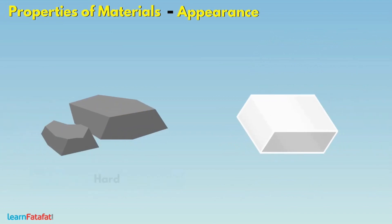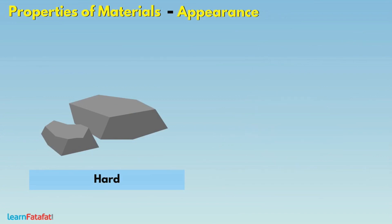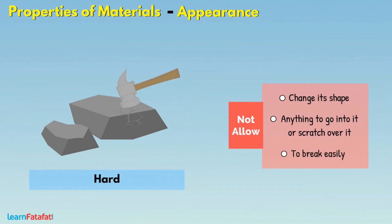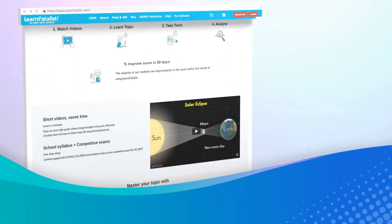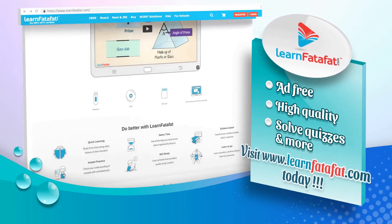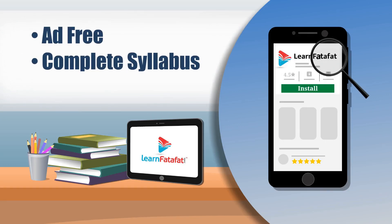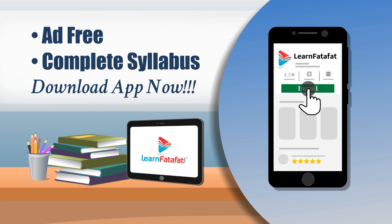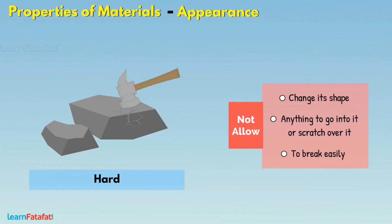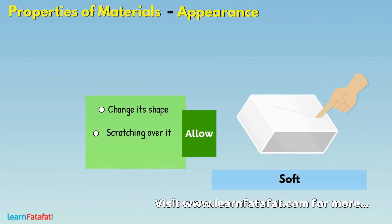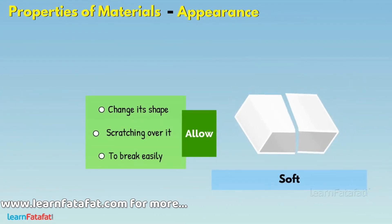Similarly, some objects are hard while others are soft. With the term hardness, we mean that the material does not allow its shape to change. It does not allow anything to go into it or scratch over it. It does not break easily. If a material changes its shape, allows scratching over it, or breaks easily, then such material is a soft material.